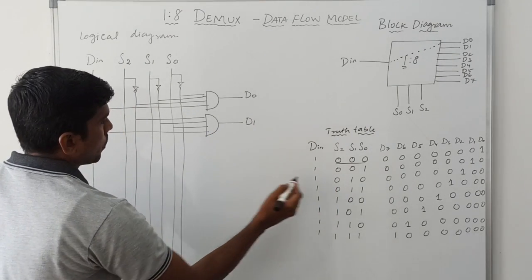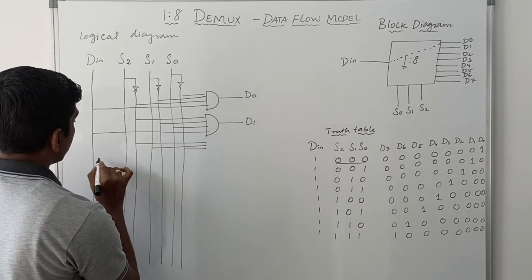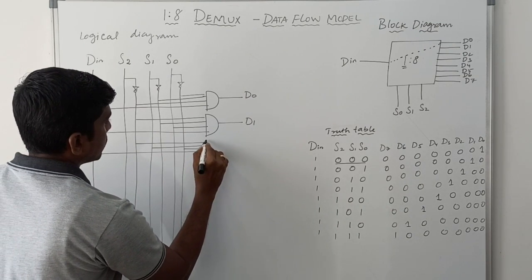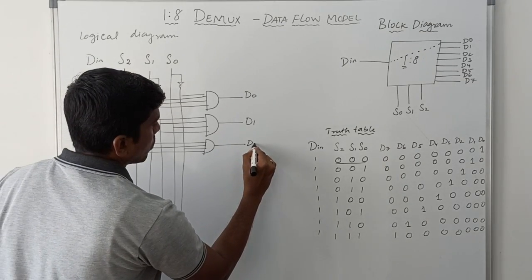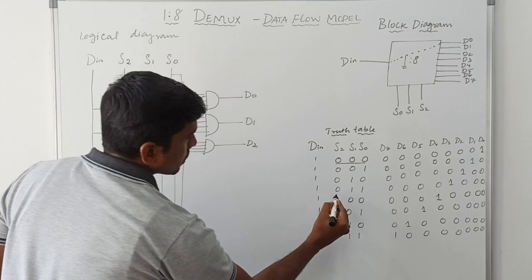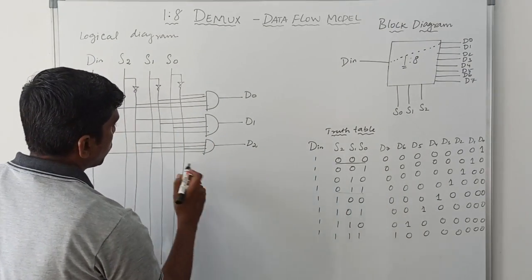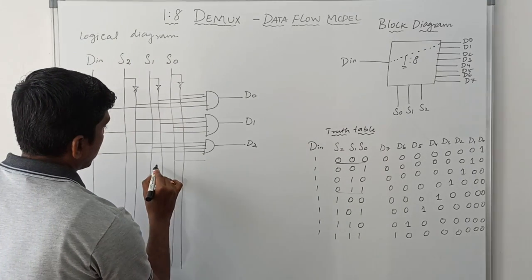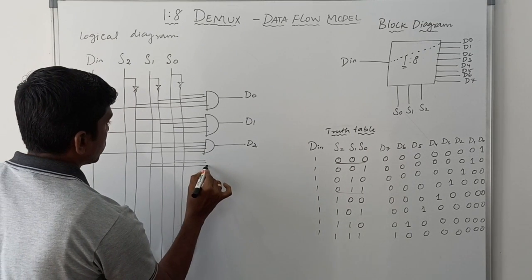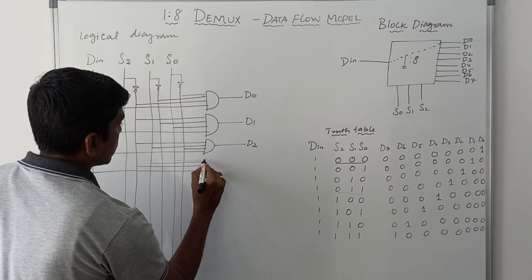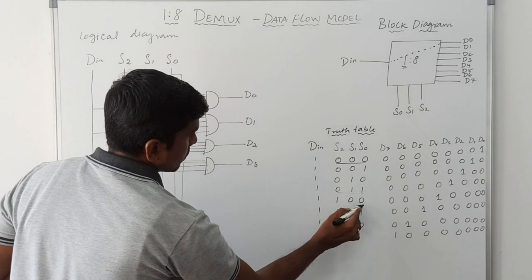The next combination is S2=0, S1=0, S0=1. I take not-S2, not-S1, S0, and DIN value into an AND gate. Output is D1. Next, S2=0, S1=1, S0=0: connect not-S2, S1, not-S0, and DIN. Four inputs connect to the AND gate; output of the gate is D2.